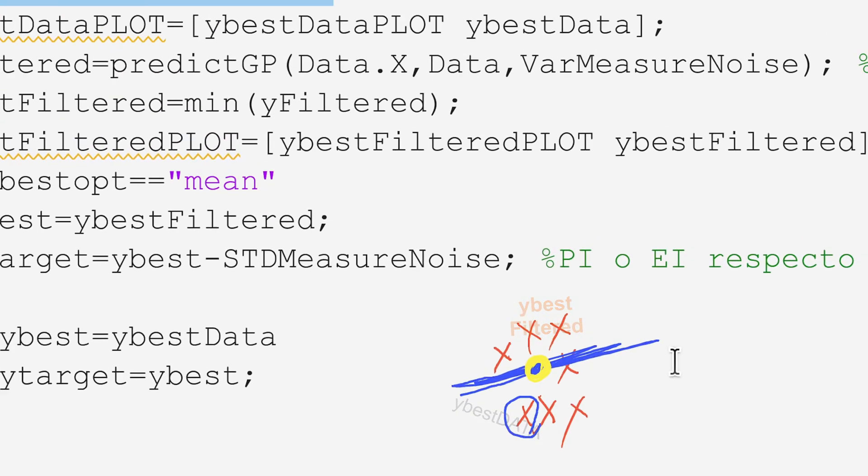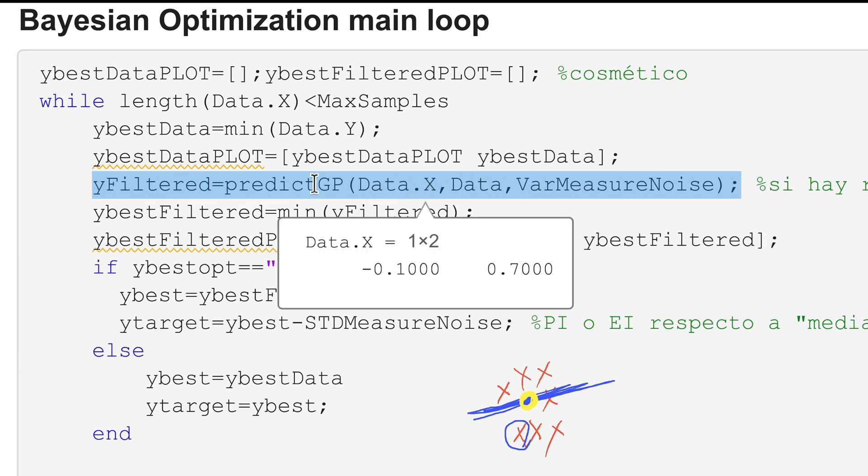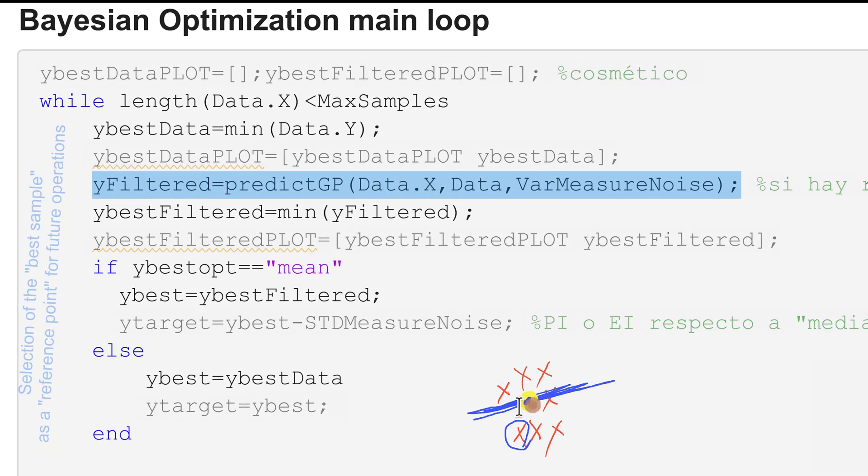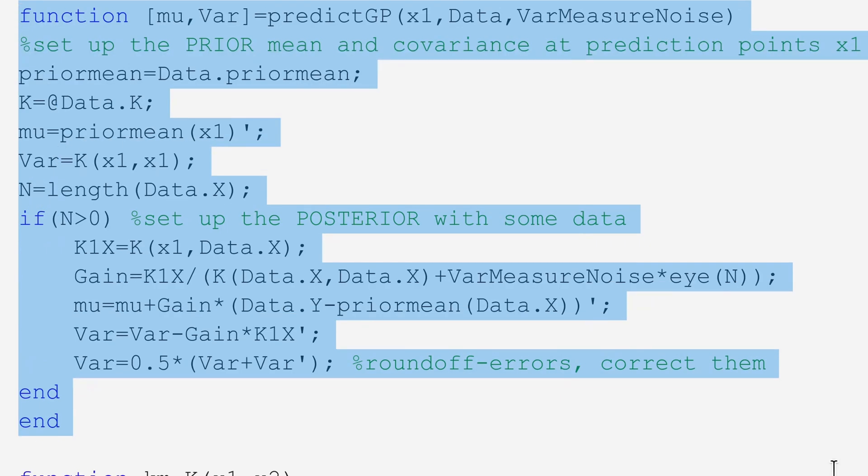The output of my Gaussian process regression estimate, in the sense that if I predict the mean output of my Gaussian process at the sampling points data.x, then I get sort of this blue-yellow dot, my filtered prediction. I will predict with this Gaussian process regression formula that we have discussed in earlier videos.